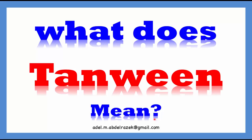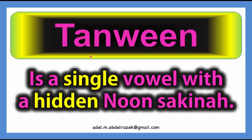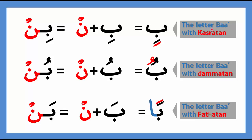What does Tanwin mean? Tanwin is a single vowel with a hidden Noon Saakinah. When I see the letter Ba with kasratan, one kasra is the vowel and the other kasra is a hidden Noon Saakinah — we pronounce this Noon but don't write it. So I say Bin, Bun, Ban. That's why we put Tanwin with Noon Saakinah in the same category and give them the same rules, because Tanwin gives you a hidden Noon Saakinah, and in Quran we focus mainly on what you pronounce.